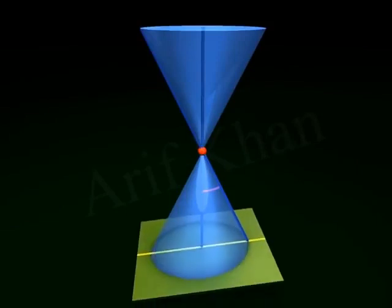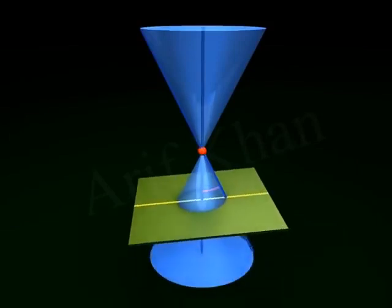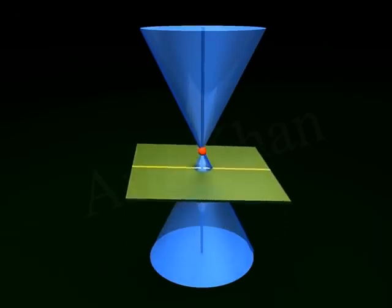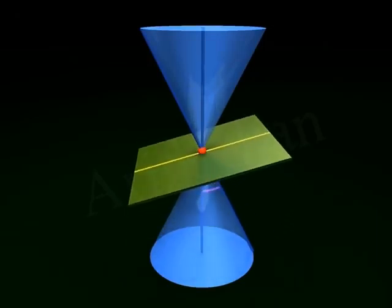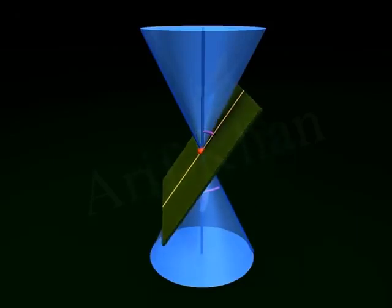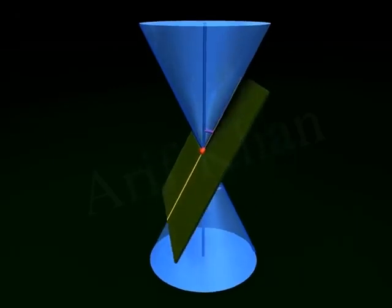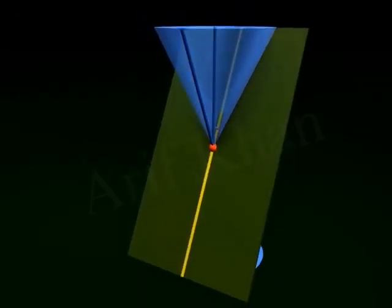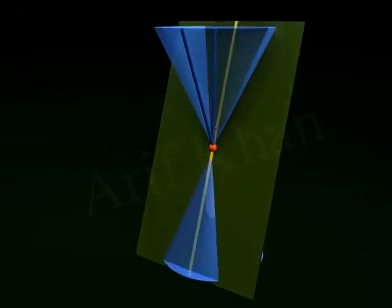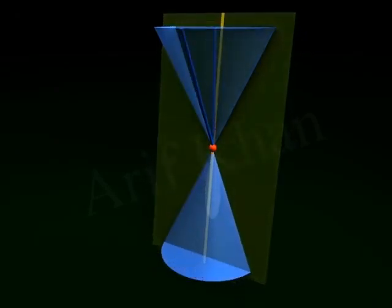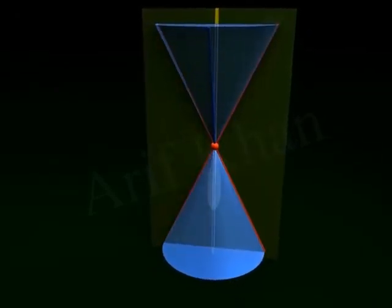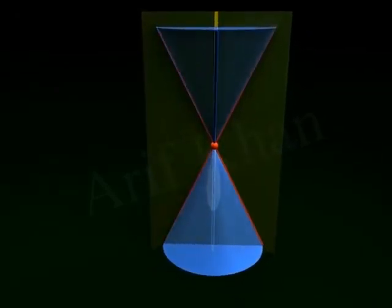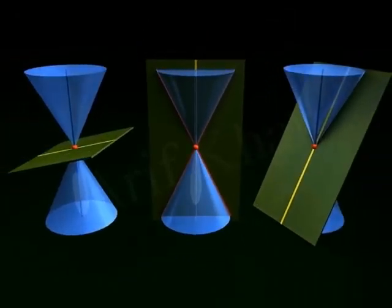Degenerate Conics. If the plane intersects the double right circular cone at its vertex, the ellipse becomes a point, the parabola becomes a line, and the hyperbola becomes two intersecting lines. The figures so obtained are called degenerate conics.